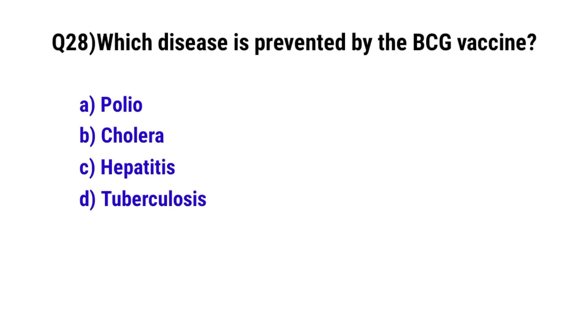Question No. 28: Which disease is prevented by the BCG vaccine? The correct option is D: Tuberculosis.